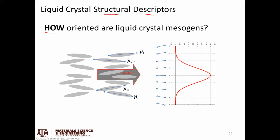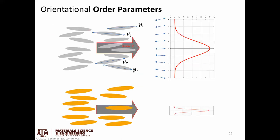We described liquid crystals before — this is an example of a nematic liquid crystal where we have mesogens aligned in a particular direction. But we didn't talk about how we define how aligned they are. So we're going to start introducing terms to answer that question, and these are called order parameters.